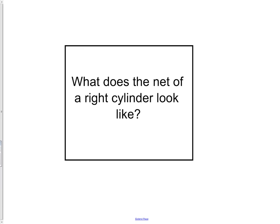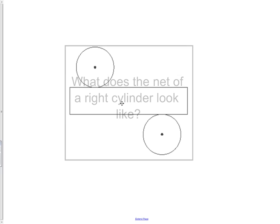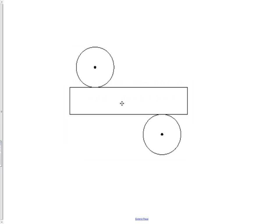What does a net of a right cylinder look like? Well, if you think of a can, we have two circles, and then if we cut those off and cut down the edge of the can, what would the object be left that we have? It would actually be a rectangle. A cylinder is a rectangle and two circles once it is unfolded and created into a net.